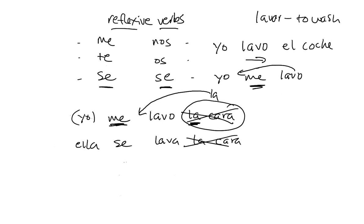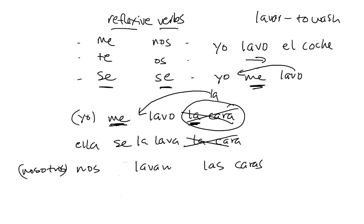If we wash our faces — las caras — with nosotros, nos lavamos las caras: 'we, to ourselves, wash the faces.' And if you simply wanted to say 'we wash them,' meaning our faces, las caras would be replaced by las, giving us nos las lavamos.